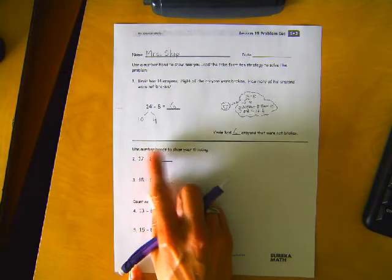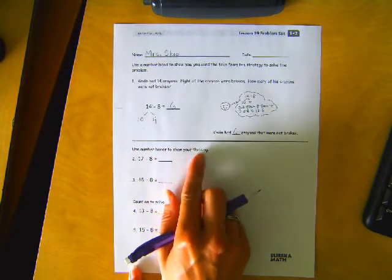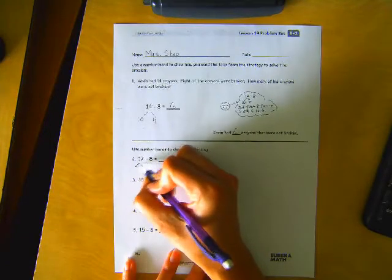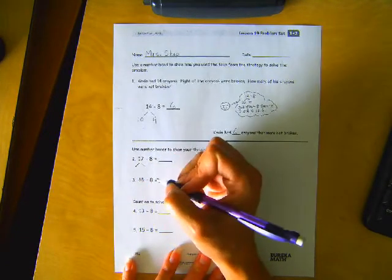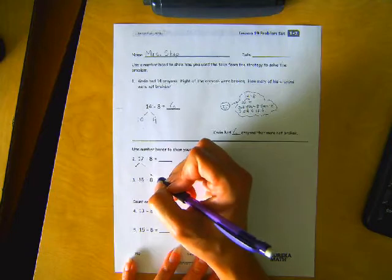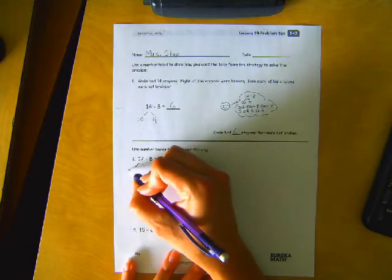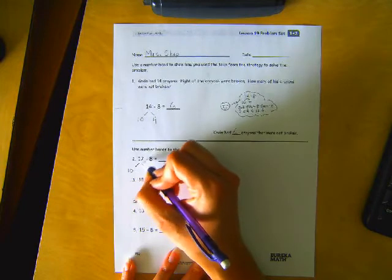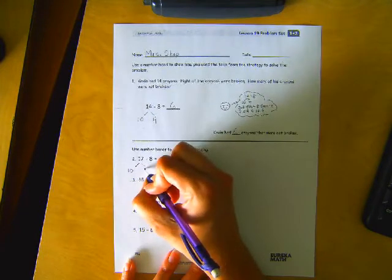Use number bonds to show your thinking. So we're going to break this up into two pieces. What two pieces are we going to have? We're going to have a friendly 10. And then what else do we need to get to 17? We need a 7.